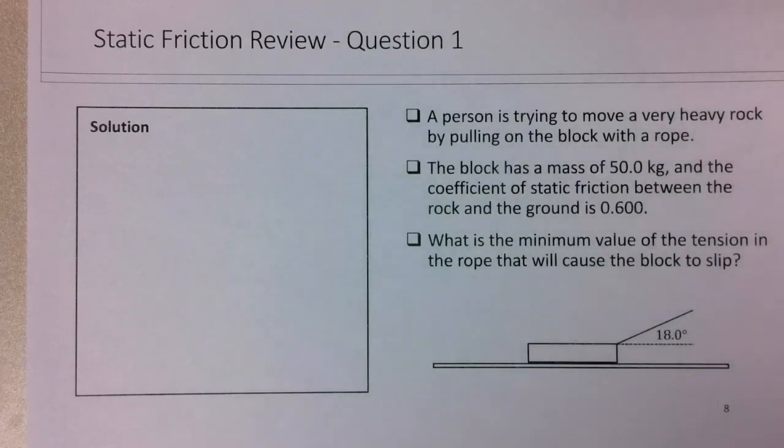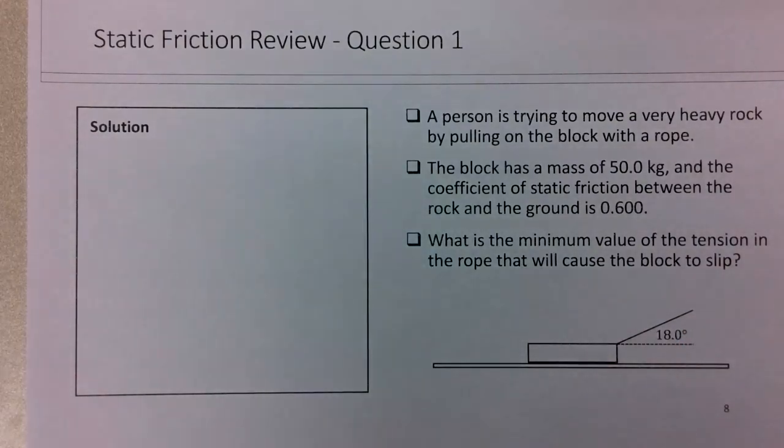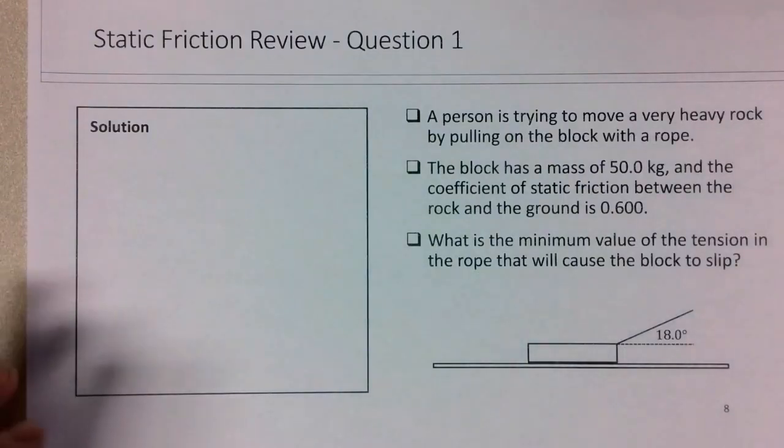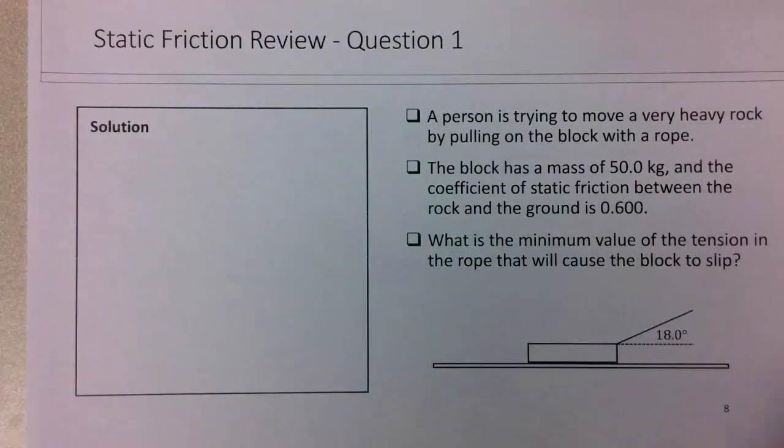So we've got to note that here there is an 18 degree angle between the tension and the horizontal, and that will affect the size of normal force, which will affect the size of the maximum static friction force.